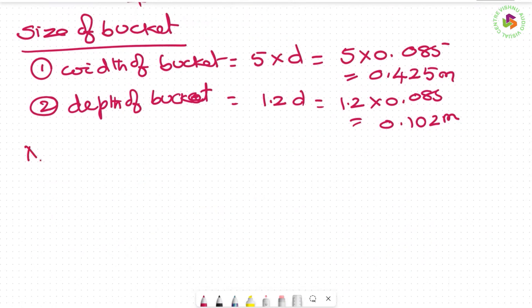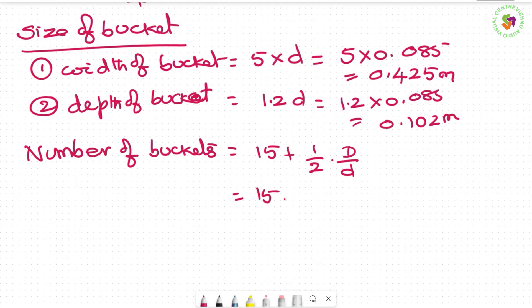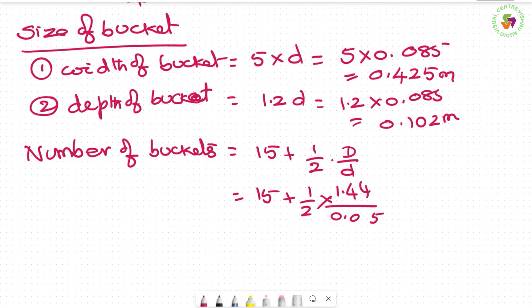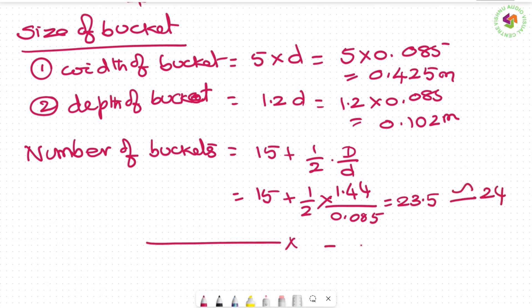Number of buckets = 15 + 0.5 × (D/d) = 15 + 0.5 × (1.44 / 0.085) = 23.25 ≈ 24 buckets. That completes Problem 1.